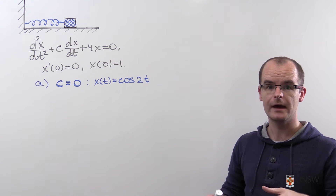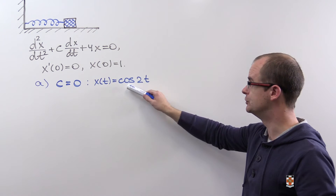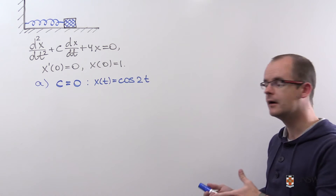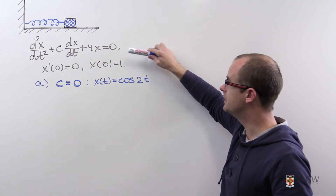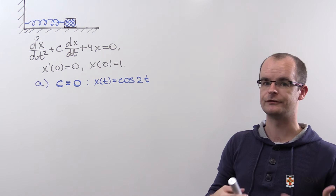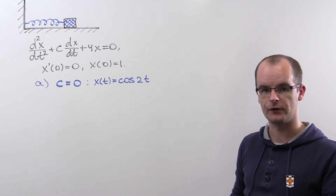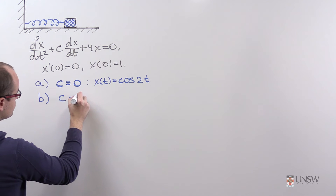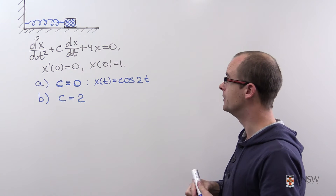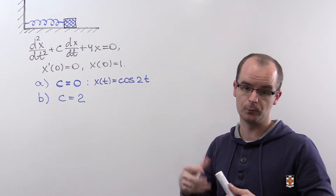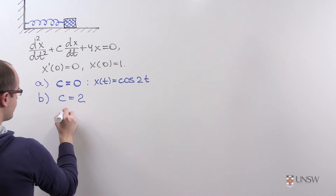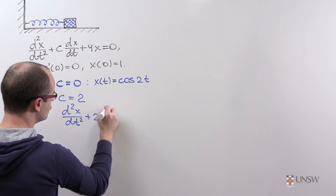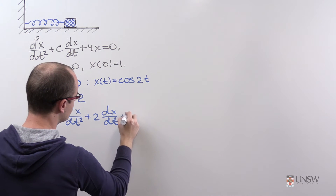We have done part a and obtained the solution for c equals 0. In part b, we are asked to solve the same initial value problem for c equals 2 and then for c equals 5. Let's start with c equals 2. In this case, the differential equation becomes x'' plus 2x' plus 4x equals 0.